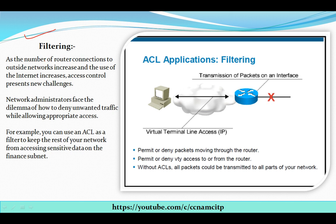As the number of router connections to outside networks increases and the use of the internet increases, access control presents new challenges. Network administrators face the dilemma of how to deny unwanted traffic while allowing appropriate access. For example, you can use an ACL as a filter to keep the rest of the network from accessing sensitive data on the finance subnet.